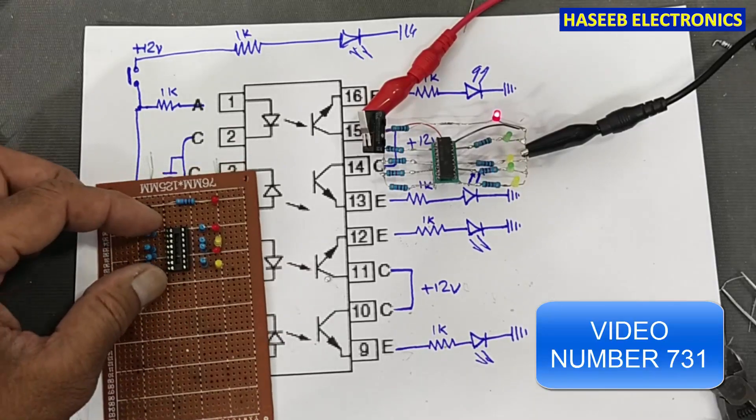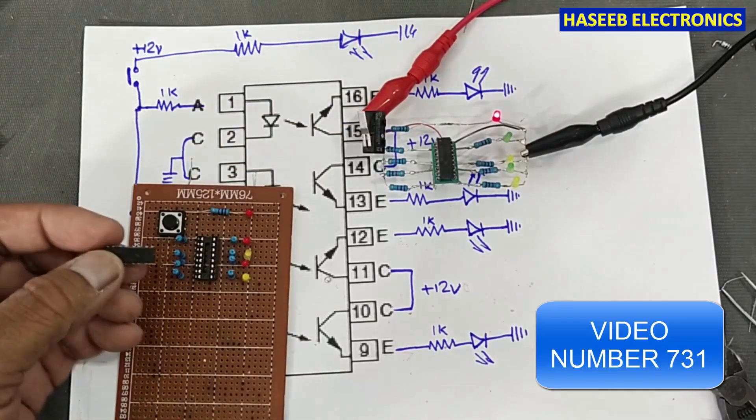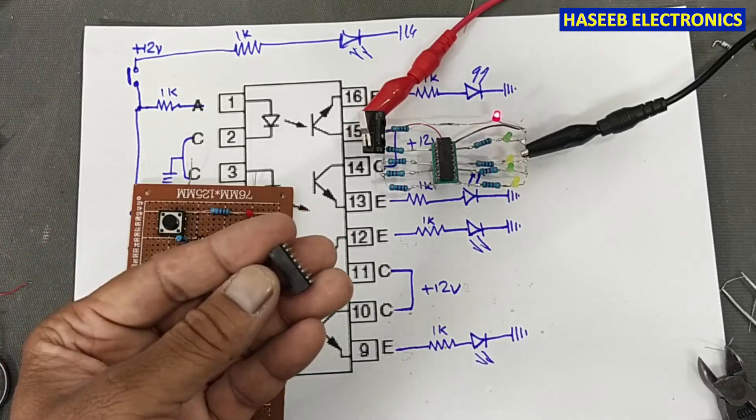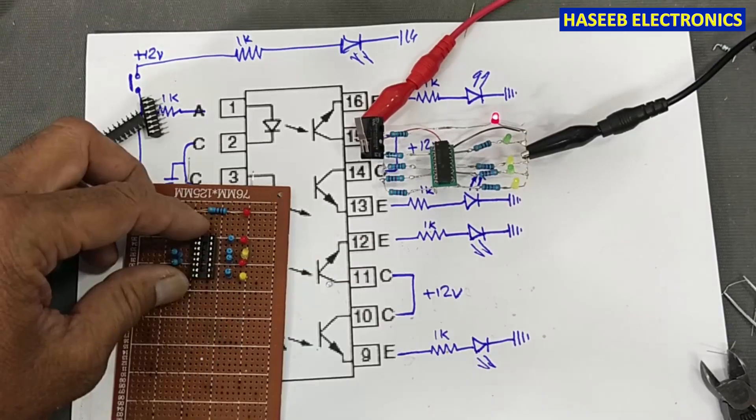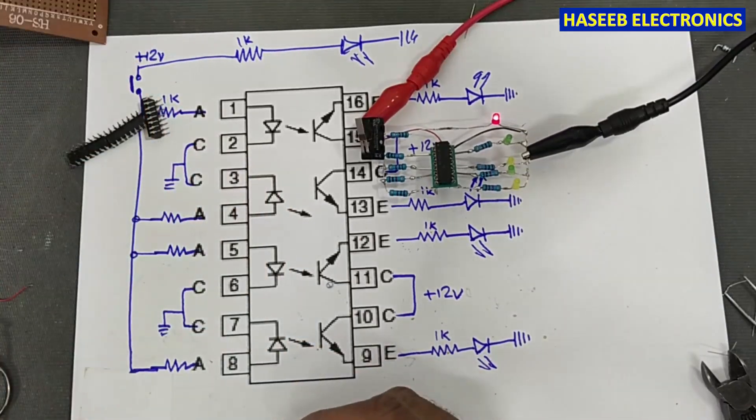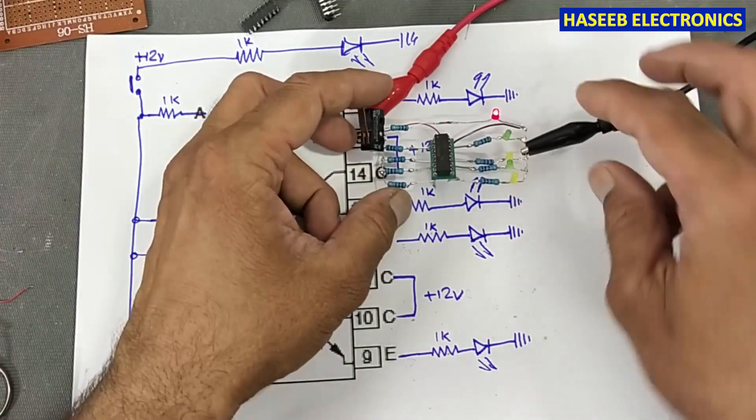In our last video, we made a prototype tester for ILQ5 optocoupler ICs. We discussed how to assemble the components on the ViroBoard. If we don't have this ViroBoard, here's how we can assemble it.